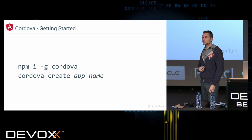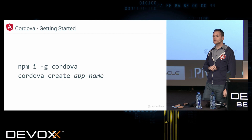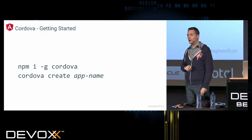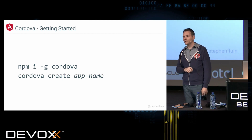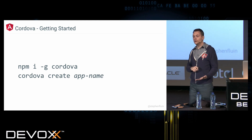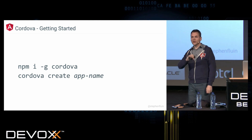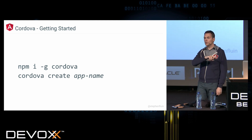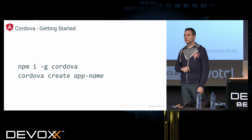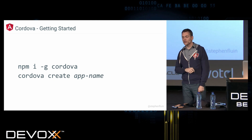If you're looking to get started with Cordova, it's relatively simple — all of these examples require NPM. You install Cordova globally, then you can create a new application with 'cordova create app-name'. I've done this before and we'll get into it in the live demo, where I'll show you the next steps and how easy it is to connect that to an Angular application.